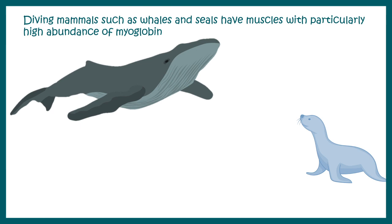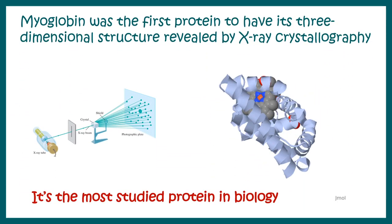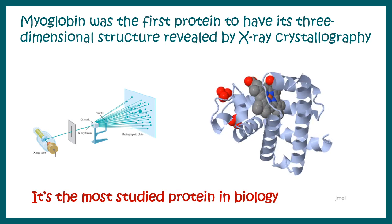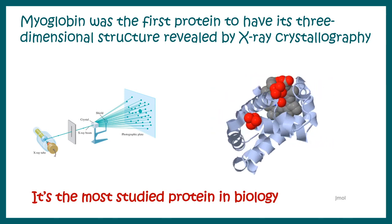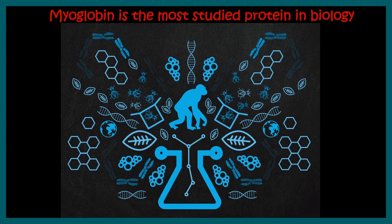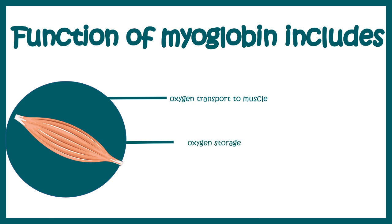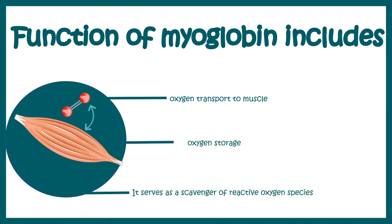Myoglobin was the first protein for which the X-ray crystallographic structure was determined, and it is also the most studied protein in biology. Myoglobin has some oxygen transport function but it's very nominal — the major function is oxygen storage. It also serves as a scavenger for reactive oxygen species in the muscles.